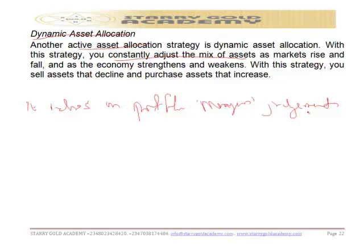You can see the difference from the constant weighting strategy. With constant weighting, if an asset is doing well you sell it to come back to the target mix, and if it is not doing well you buy more. But with dynamic allocation, if an asset is not doing well you quickly sell it to reduce your loss, and if it is doing well you buy more to improve your gains.